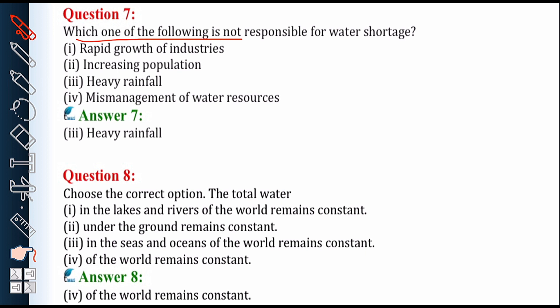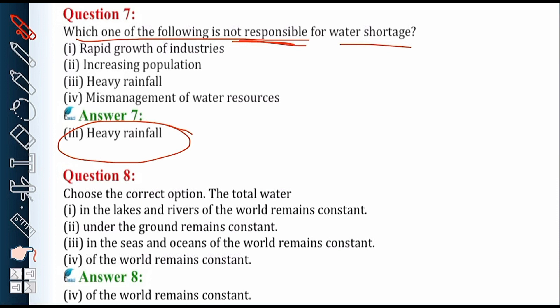Next is question number 7: which one of the following is not responsible for water shortage? The correct answer is option 3, that is heavy rainfall. Let's understand one by one: rapid growth of industry is directly responsible for water shortage because water demand increases. Increasing population causes a rise in water demand, leading to shortage. Mismanagement of water resources also leads to water shortage.